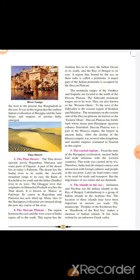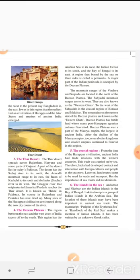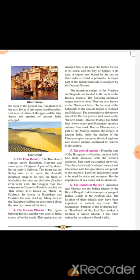Next comes the Thar Desert. The Thar Desert spreads across Rajasthan, Haryana, and some parts of Gujarat. The desert has the Sutlej river to its north and the Aravalli mountain range to its east. Next is the Deccan Plateau. This region falls within the Indian Peninsula. The Vindhya and Satpura mountain ranges are to its north, whereas the Sahyadri mountain range is towards the west coast.